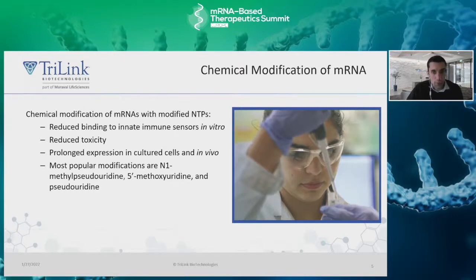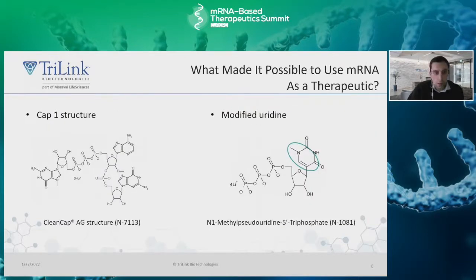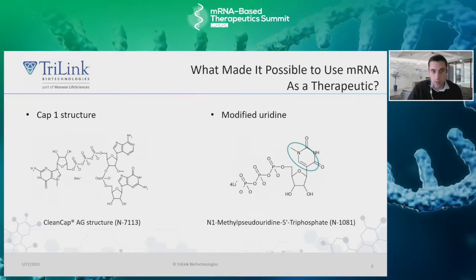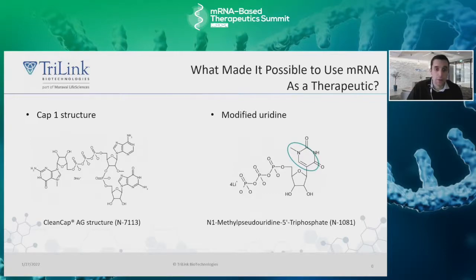Here at Trilink, we have found that the most effective approach is the use of CleanCap and N1-methyl-pseudouridine in production of the mRNA. On the left, you can see the full naturally occurring cap-1 structure provided by CleanCap, and on the right, you can see the N1-methyl-pseudouridine structure. These both take the place of classic production using a post-IVT capping reaction and wild-type bases — simple changes made during the IVT reaction that can prove very beneficial to the efficacy of the mRNA.